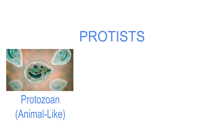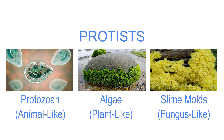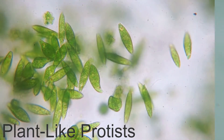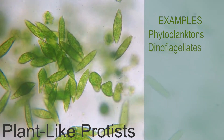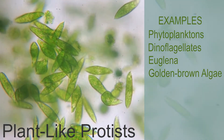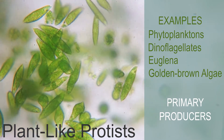Another type of microorganism is called protists. They can be classified as animal-like, plant-like, and fungus-like. Several plant-like protists include unicellular photosynthetic organisms called phytoplanktons, dinoflagellates, euglena, and golden-brown algae. They are ecologically classified as primary producers in aquatic habitats.